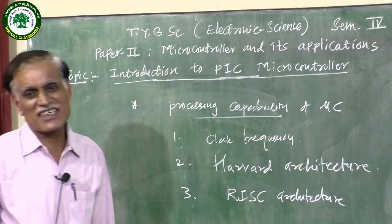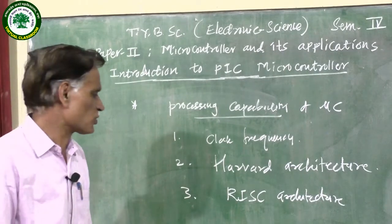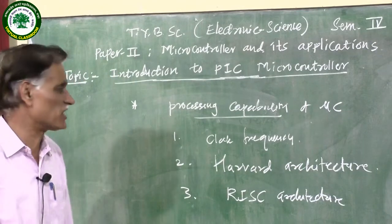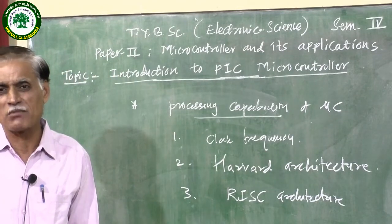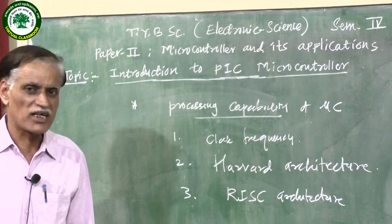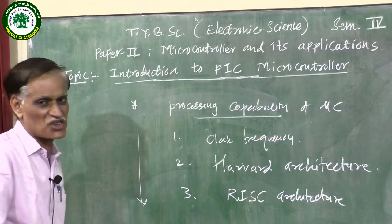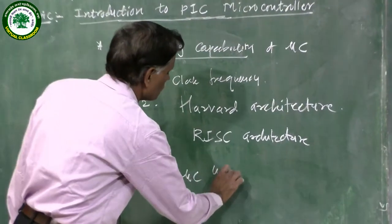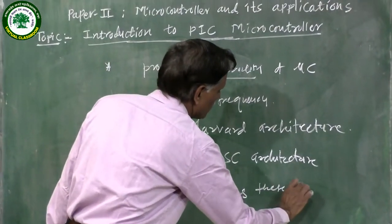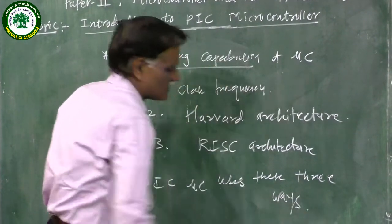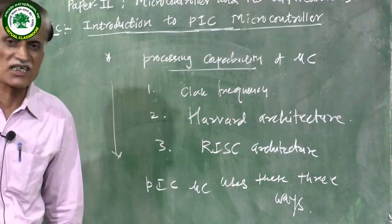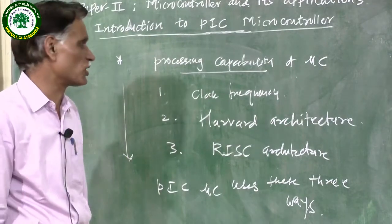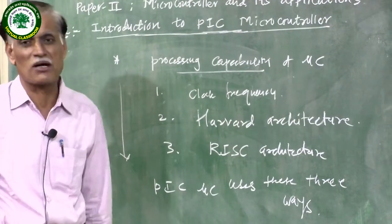You modify the architecture of the CPU of the microcontroller in such a way that you form a RISC architecture. With the help of these three different ways, we can increase the processing capability of the microcontroller. Importantly, all three of these ways are used in the PIC microcontroller. Therefore, PIC microcontrollers are more superior compared to other microcontrollers, and from that point of view, today we introduce the concept of PIC microcontrollers.